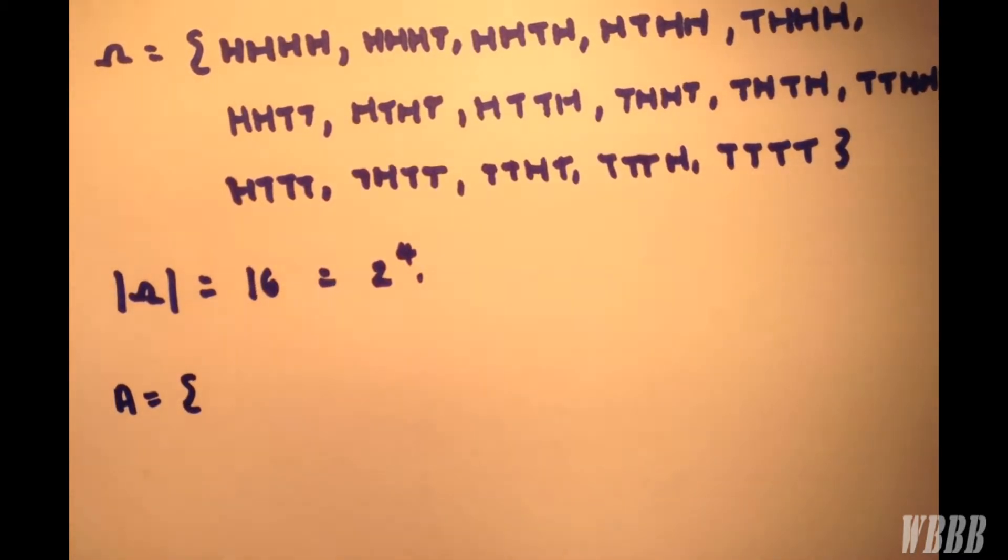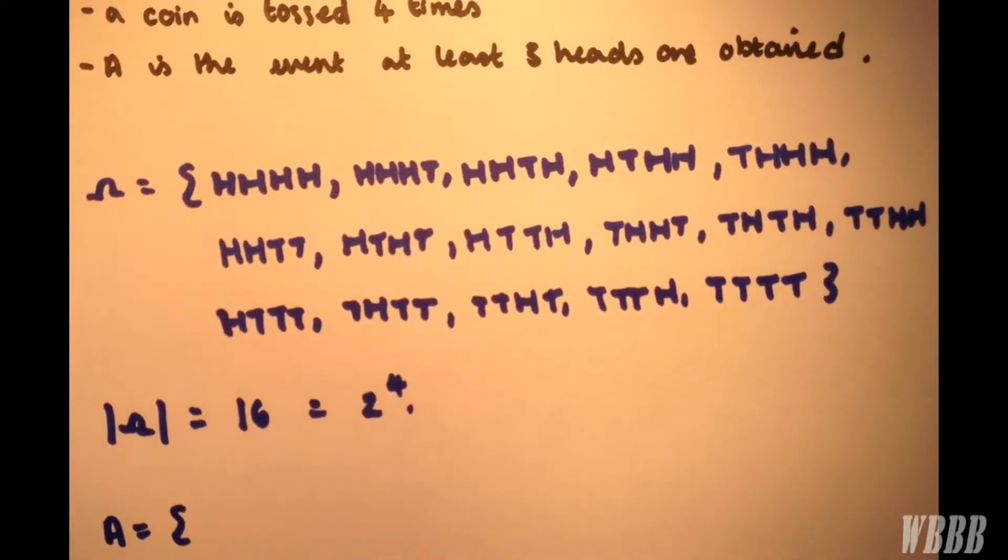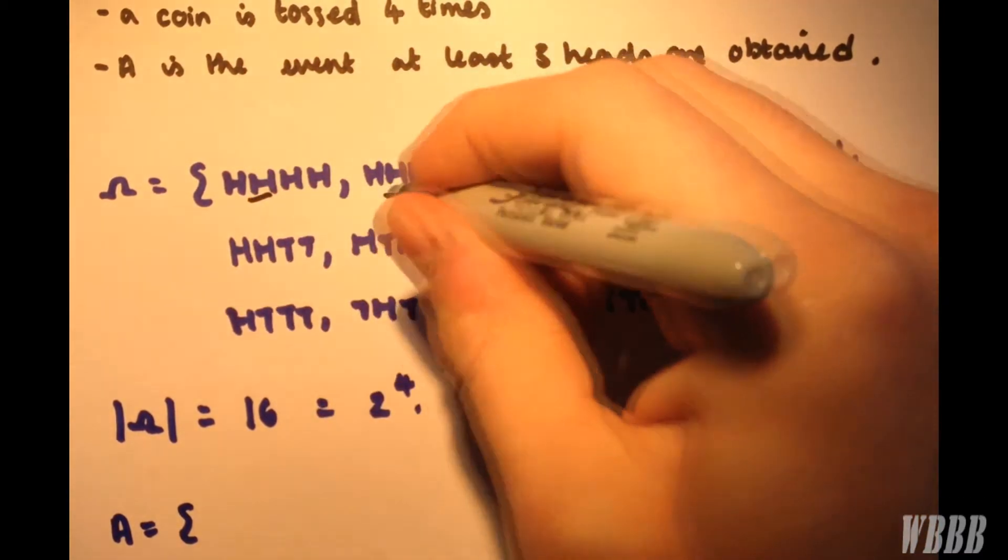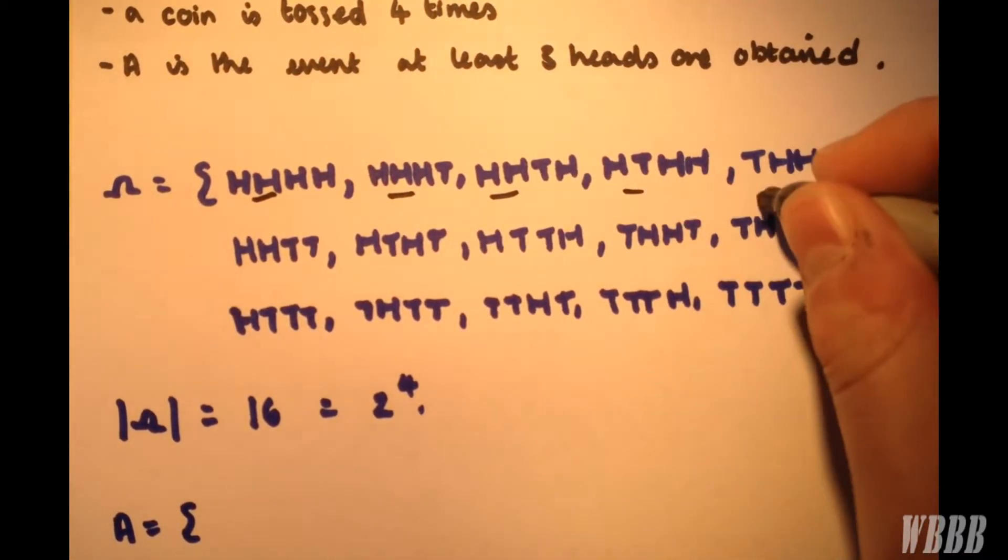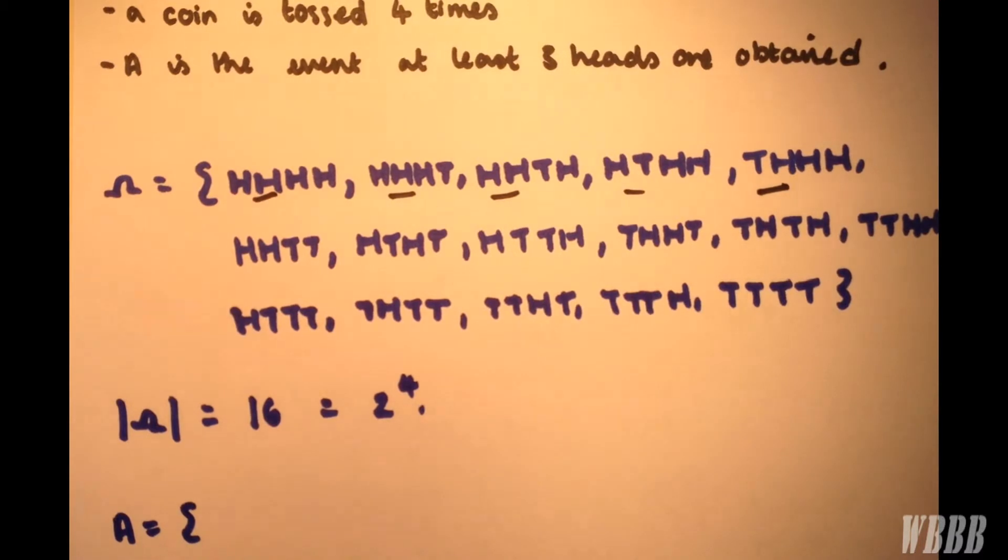We look at the following set here. So where are there at least three heads? It's here, here, here, here, and here. So event A is simply a subset of set omega.